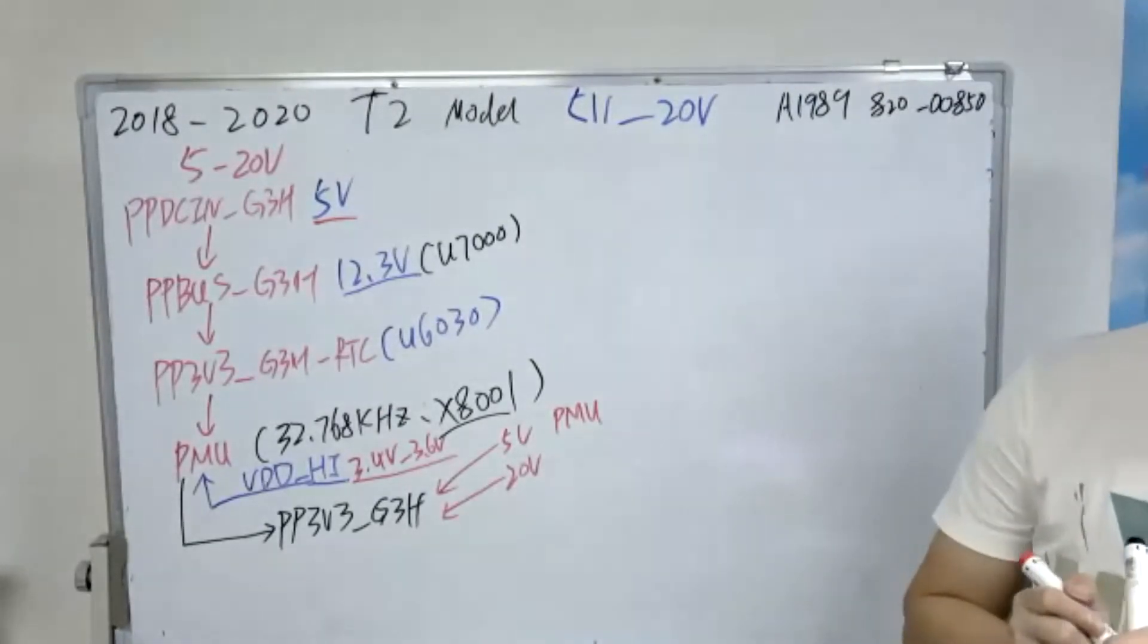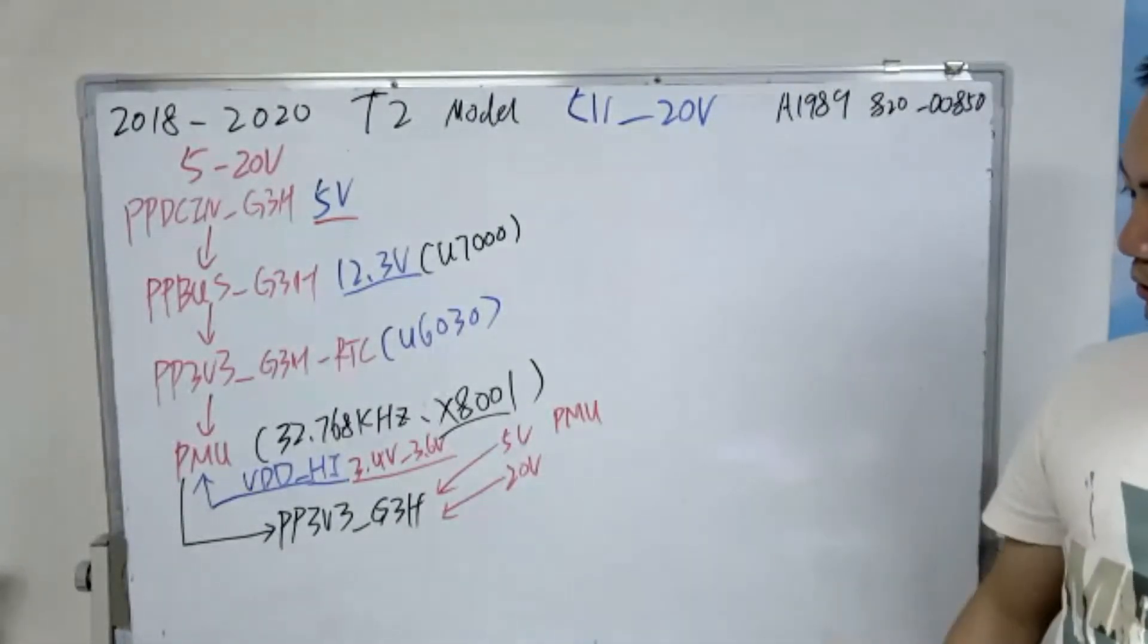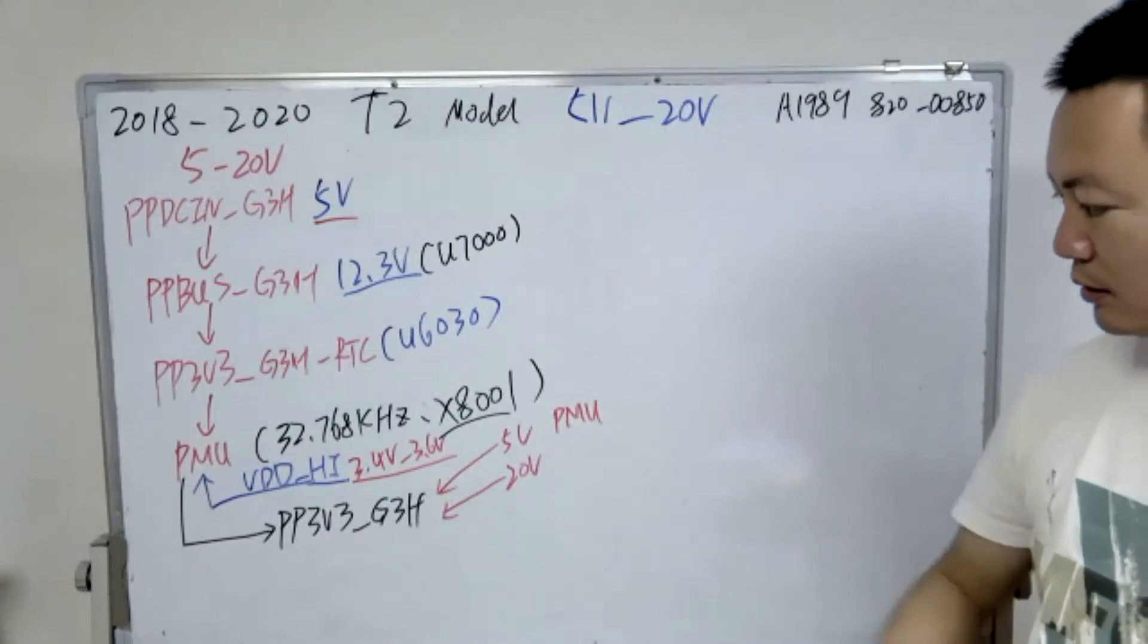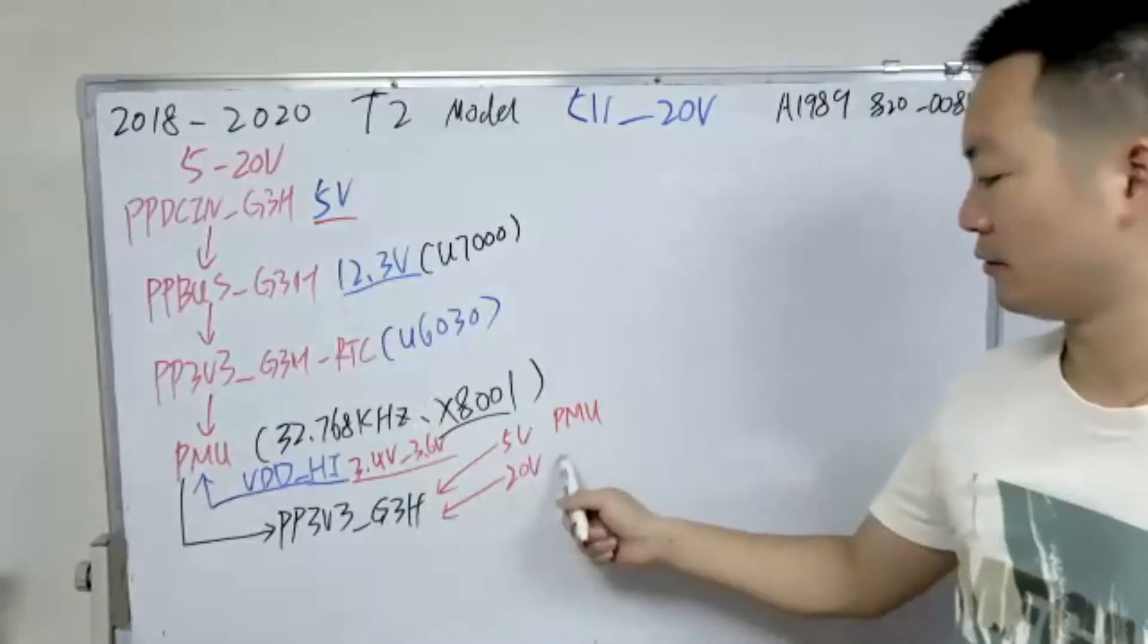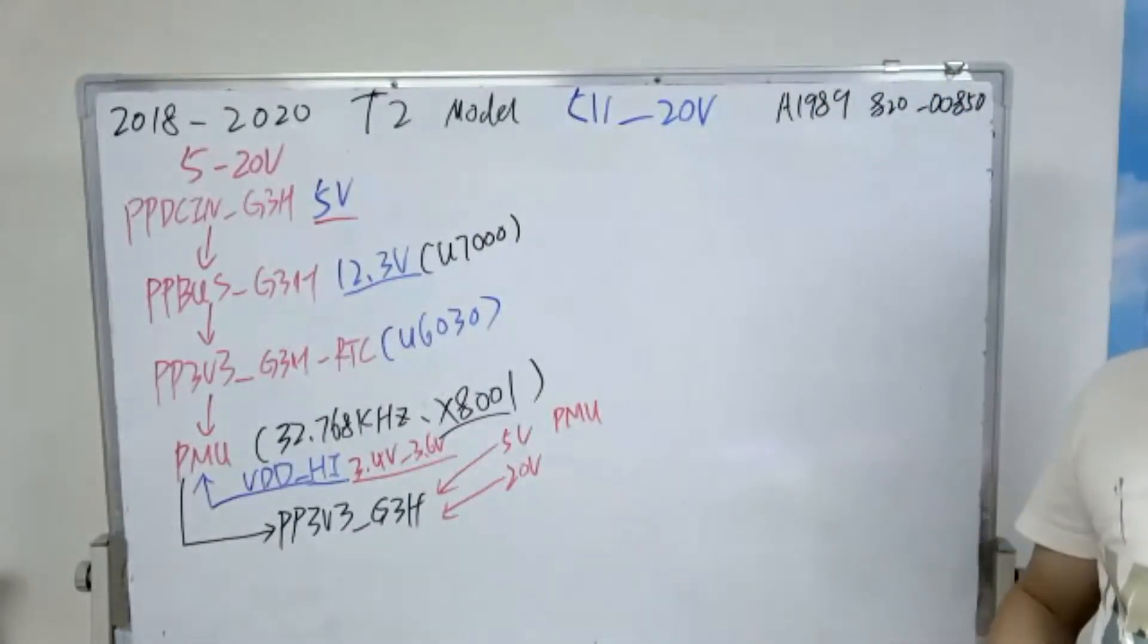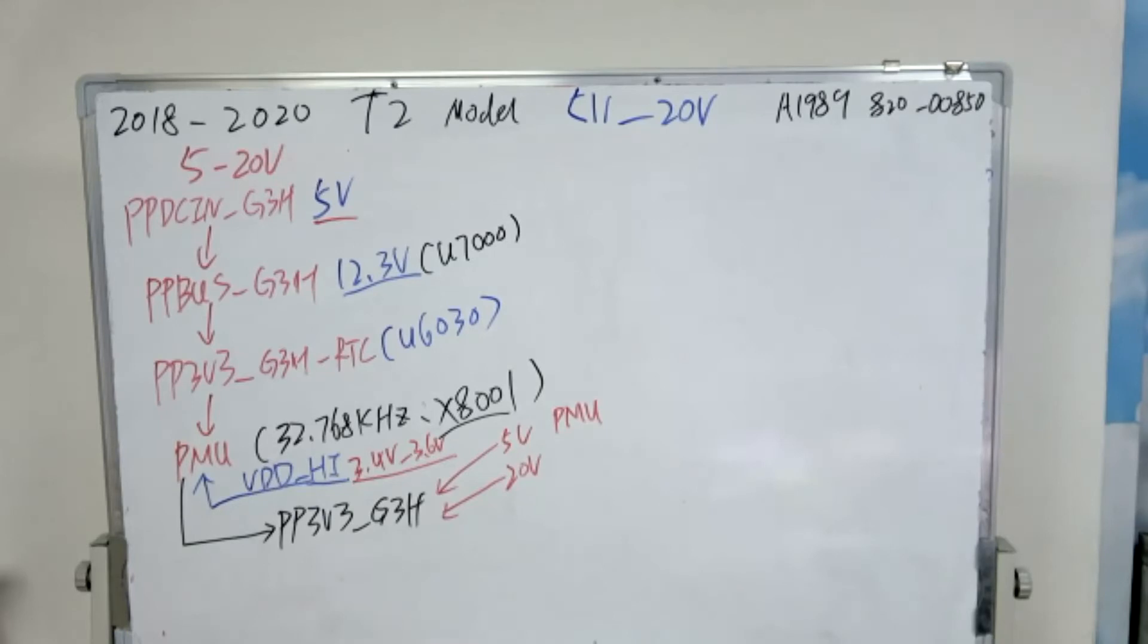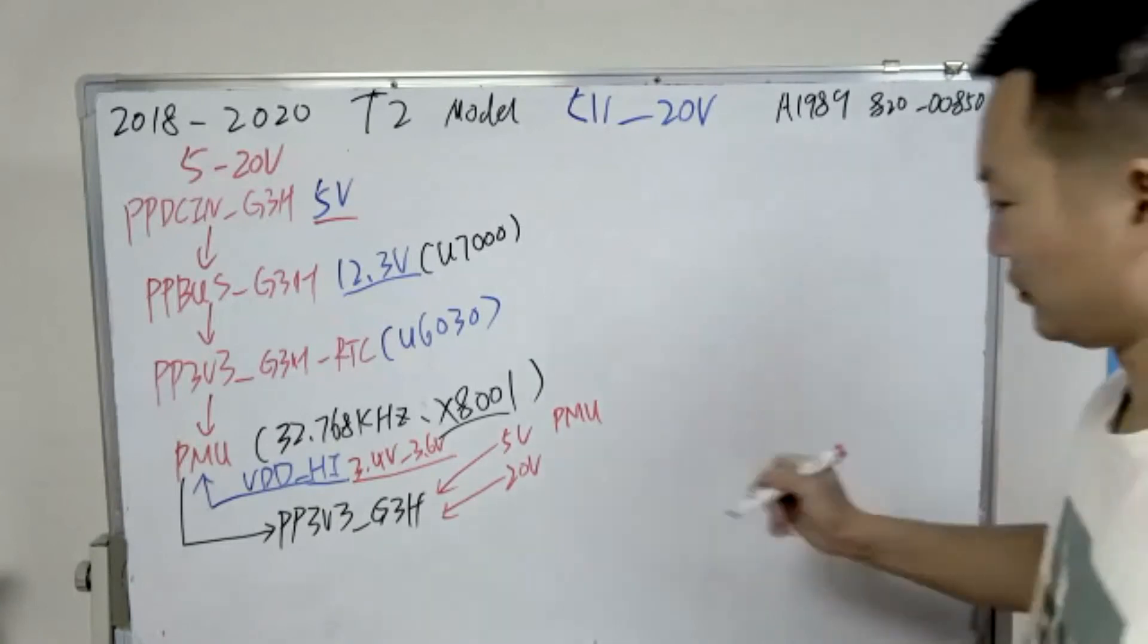Sure, I need to record. T2, T2 will send the signal to this voltage. This voltage is from which IC? From which IC? From power IC, yes, from power IC, okay, from the TPS.